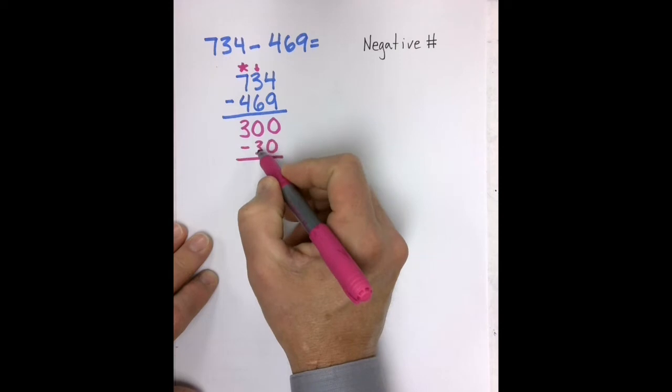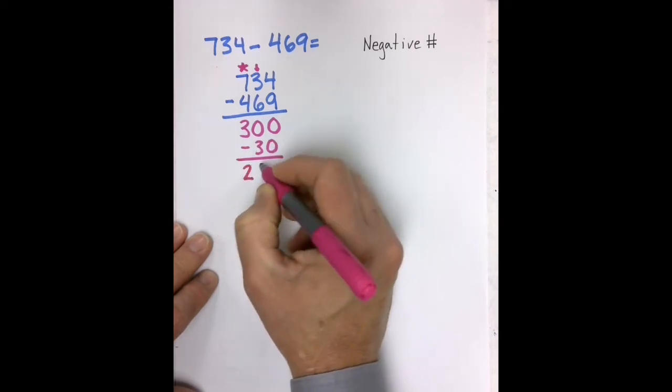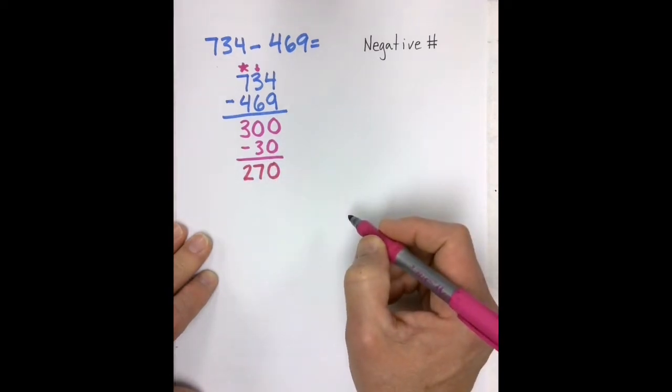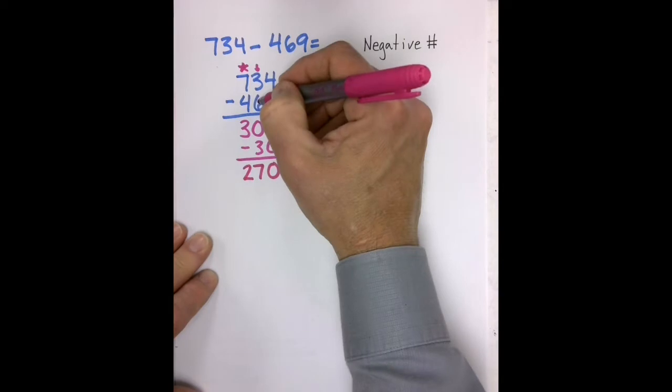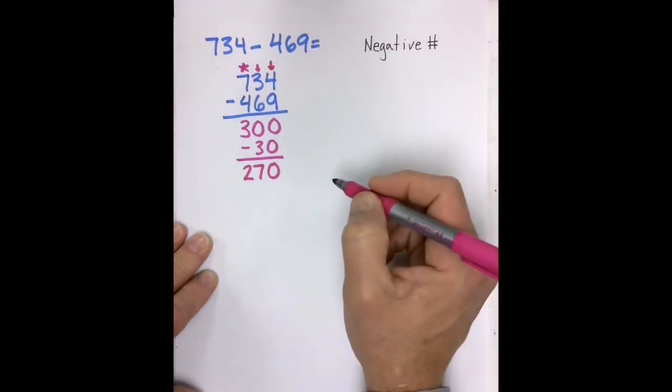I know that 30 minus 3 is 27, so 30 tens minus 3 tens is 27 tens, or 270. Now that I've taken care of my tens, I go to my ones, and I go through the same process.